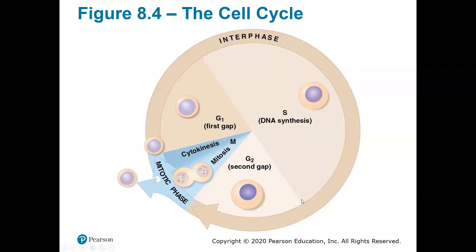Once the DNA molecules have been copied, you enter into G2, the second growth phase. The cell will continue to get larger, but more importantly it will copy and create other organelles needed for a new cell when it starts to split in mitosis. If you need a Golgi apparatus, this is where you create it. If you need extra mitochondria, this is where you create them. This prepares for the last phase of its life — mitosis — where the cell will divide equally into two identical daughter cells, and then you can start the process all over again.